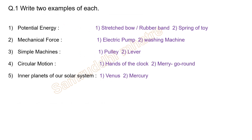Write two examples of each for five marks. Two examples of potential energy: stretched bow or stretched rubber band, and string of a toy. Mechanical force examples: electric pump or washing machine. Simple machines: pulley and lever. Circular motion examples: hands of a clock and merry-go-round.